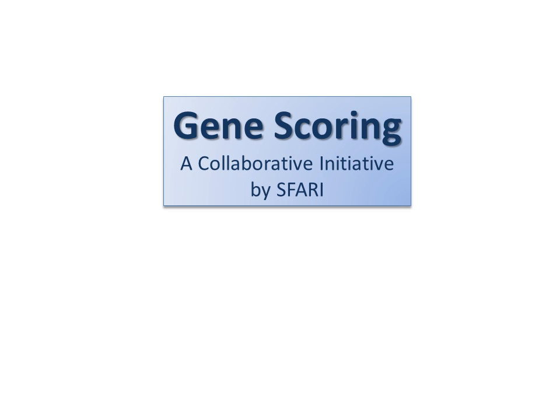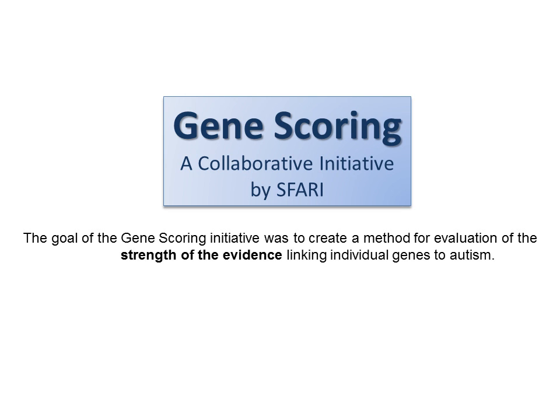Welcome to the Gene Scoring Initiative of SFARI. This collaborative initiative was recently started by the Simons Foundation with the goal of creating a method for evaluating the strength of evidence linking individual genes to autism. To provide an introduction to new users unfamiliar with the Gene Scoring Module, we have created this short tutorial. This first part will cover navigation around the Gene Scoring Module home page, as well as the Gene Scorecards and the information contained within them.